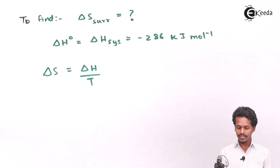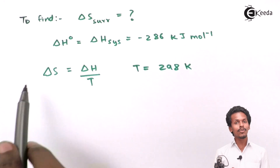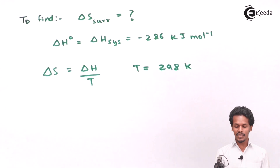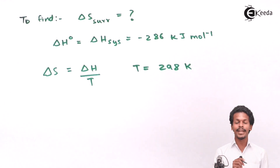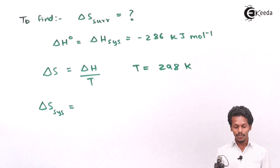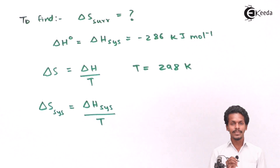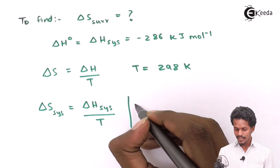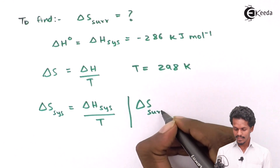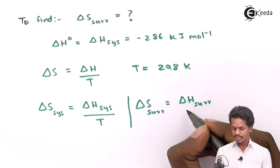So standard condition gives us a temperature of 298 Kelvin. When it comes to the individual entropy changes — the entropy change of the system and the entropy change of the surroundings — we can write: ΔS_system = ΔH_system / T, and ΔS_surrounding = ΔH_surrounding / T.